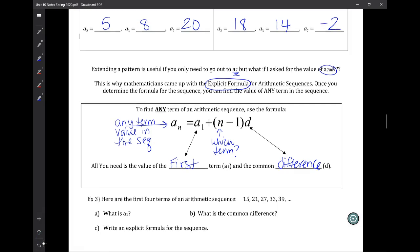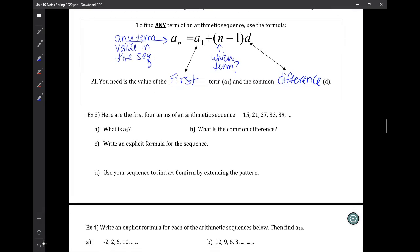Let's use this formula. Here are the first four terms of an arithmetic sequence: 15, 21, 27, 33. For us to use this formula, you need A1, which is 15, and the common difference, which is 6. Part C says write the explicit formula. All I need is: a_n = 15 + (n-1) times 6.